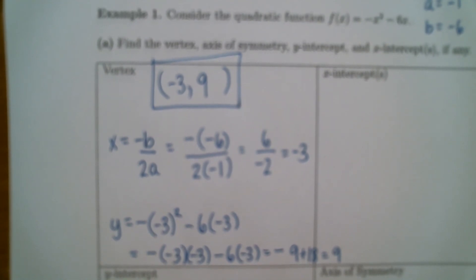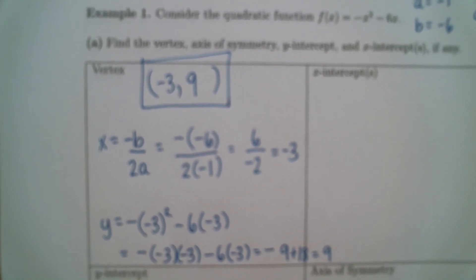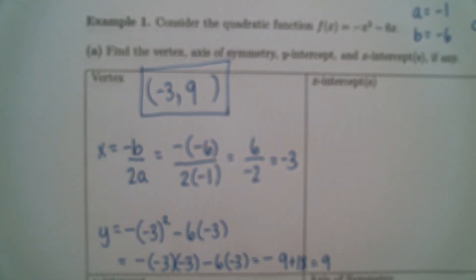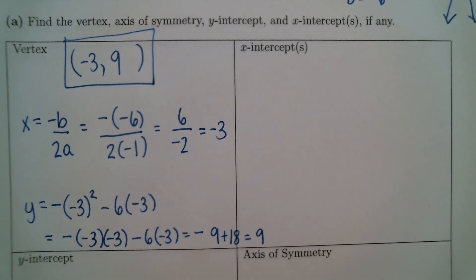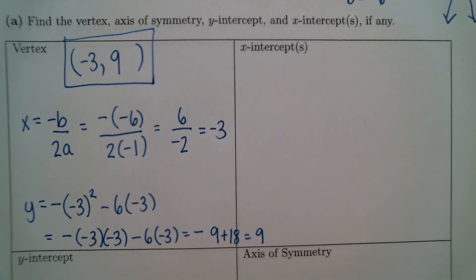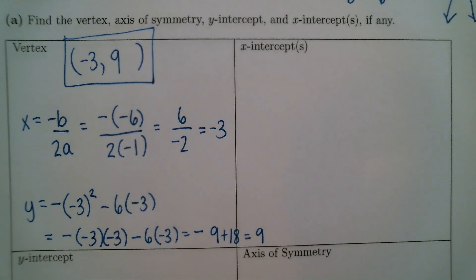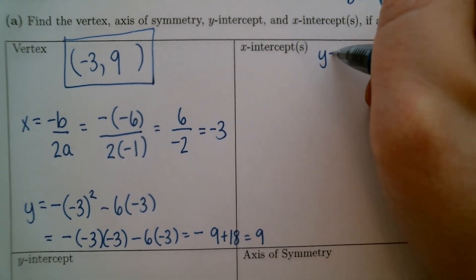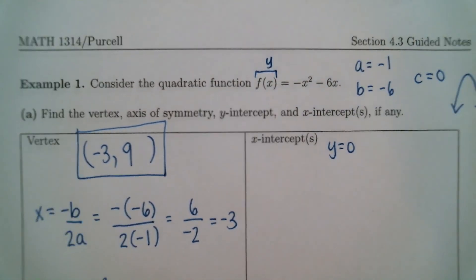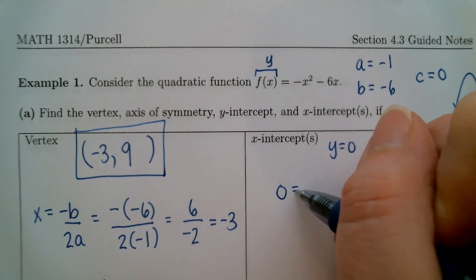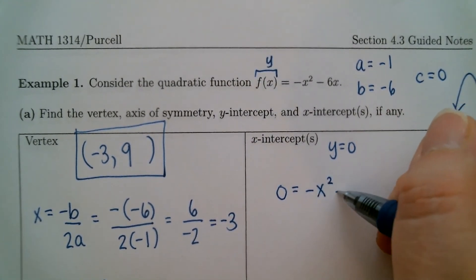Now onto the x-intercepts. Remember, for a parabola you need at least three points. The extra points come from the intercepts — both x-intercepts and y-intercepts. To find an x-intercept, you need to set y equal to zero. Since f of x is your y, we're going to get zero equals negative x squared minus 6x, and then solve this for x.